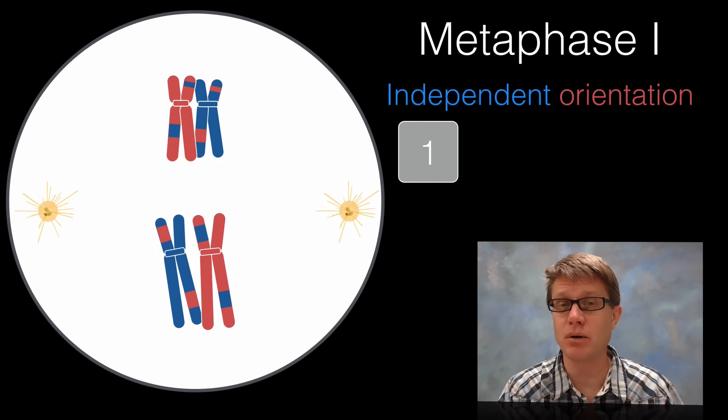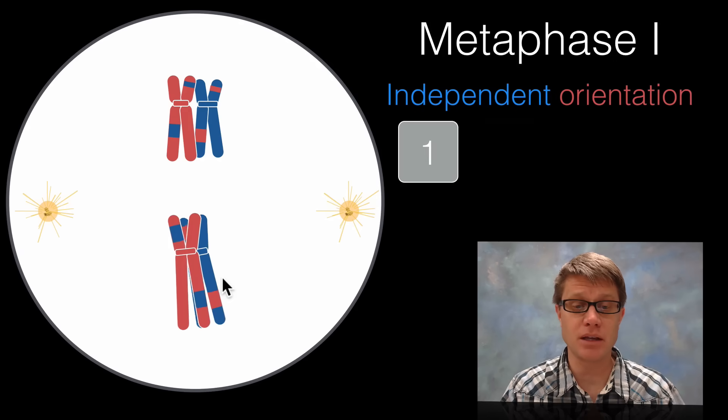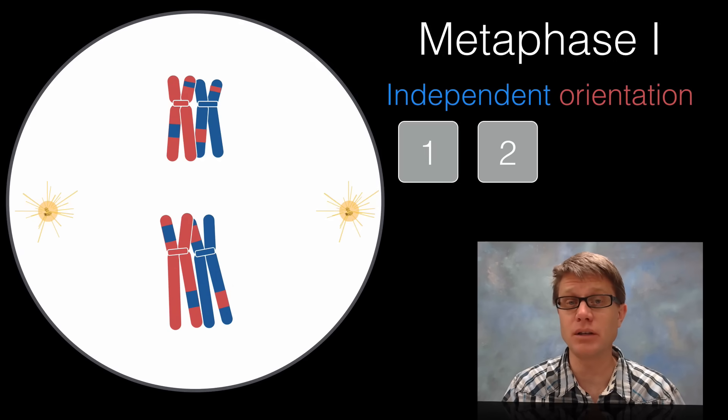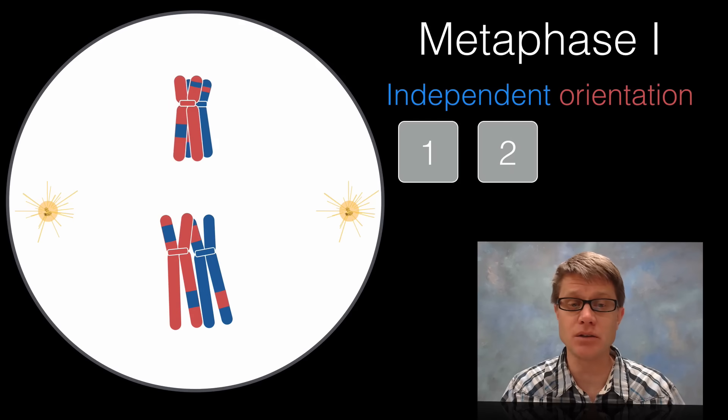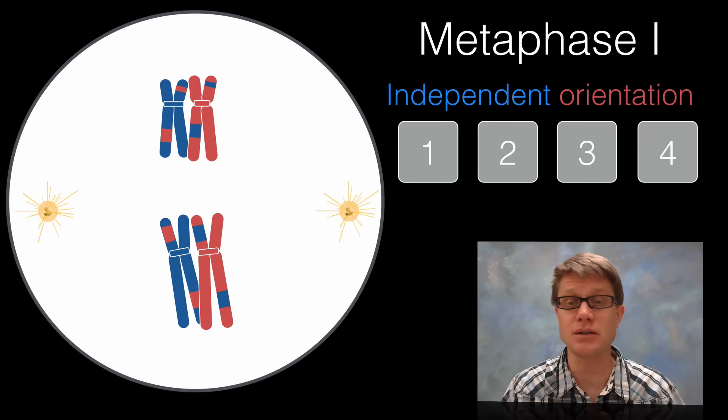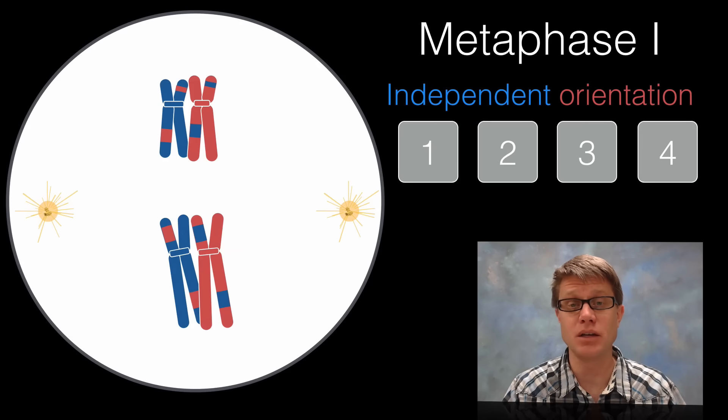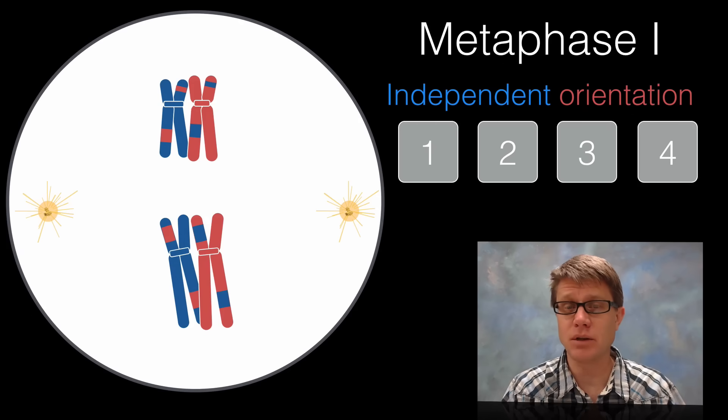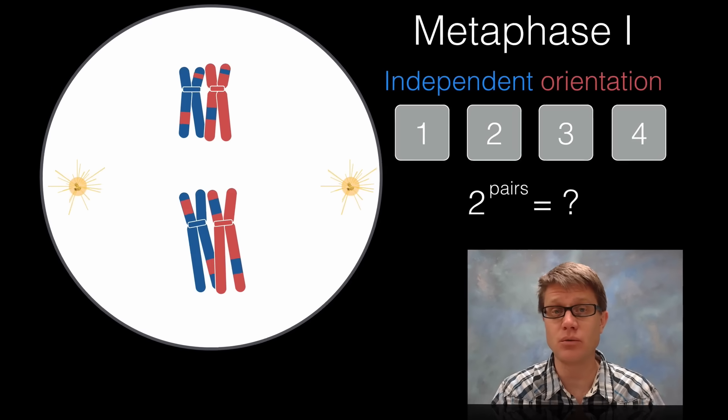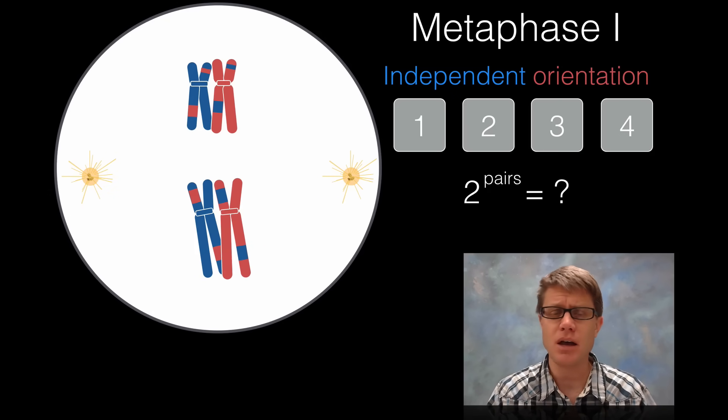Next we go into metaphase 1. In metaphase, you can see that they're all lining up or meeting in the middle of the cell at what's called the metaphase plate. They could have organized themselves like this with the blue one on the left and the red one on the right, but they could have easily organized themselves differently. So they could have been in a different position. This would be a totally different orientation of the chromosomes. It also could organize like this for chromosome 2 or it could organize like this. So what do we have? We have four different ways that these chromosomes could orient themselves independently at metaphase 1. What is that giving us? It's giving us variation. There are 2 raised to the number of pairs possibilities of how they could arrange at independent orientation of metaphase 1.